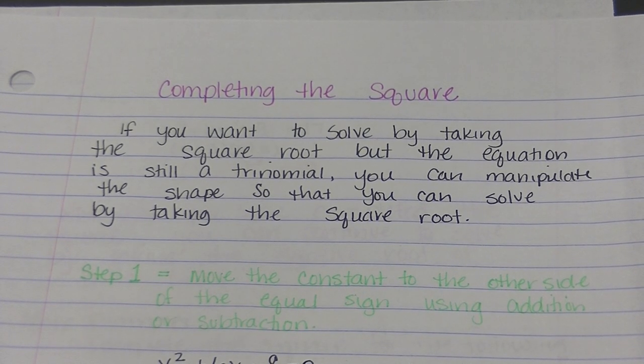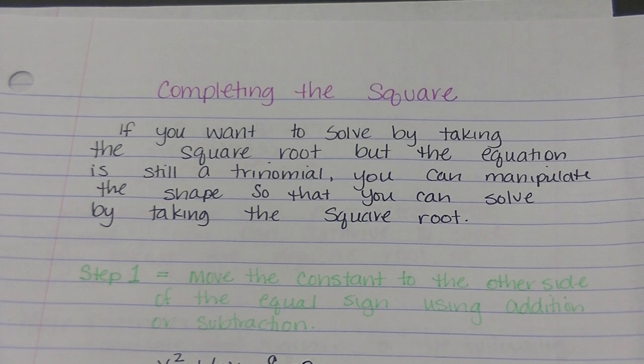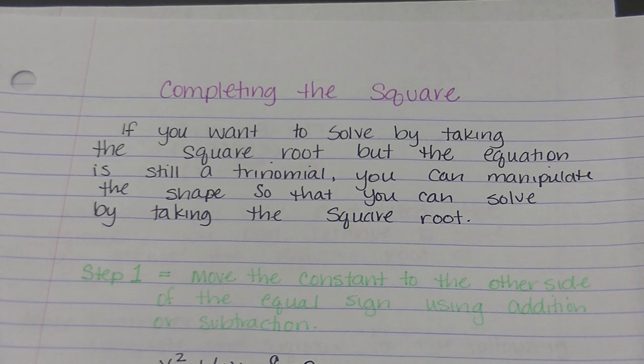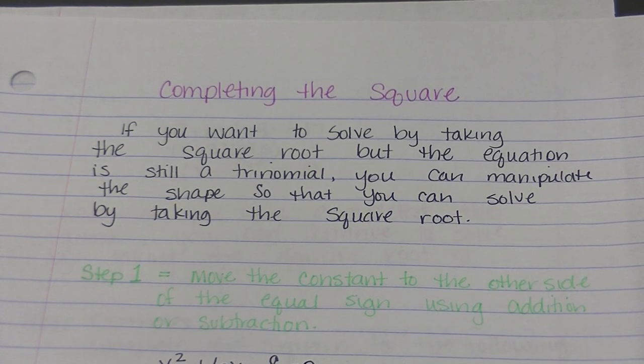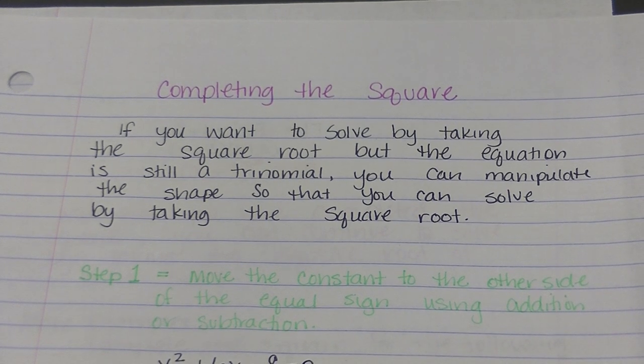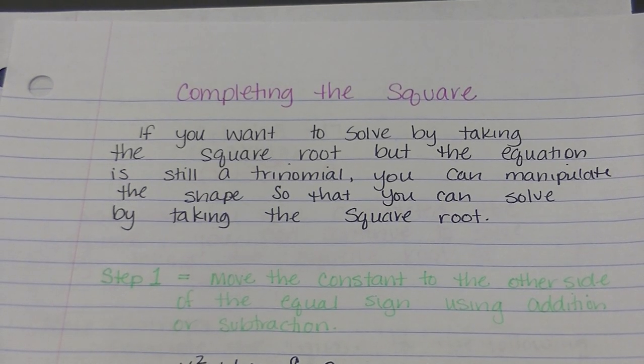All right, so now we're going to do completing the square. This is an extension of solving by taking the square root. If you want to solve by taking the square root but the equation is still in trinomial form, you can manipulate the shape of the equation so that you can solve it by taking the square root.